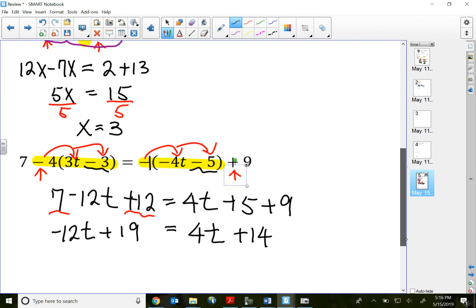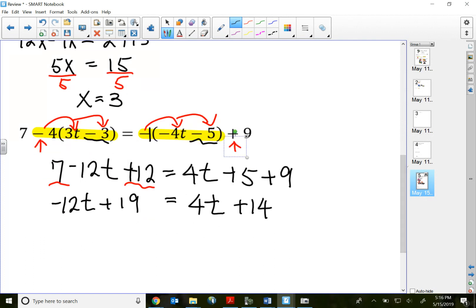I got variable terms on both sides. Negative 12t on the left, positive 4t on the right. Positive 4t is bigger than negative 12t, so I'm going to move my negative 12t to the right side so I can keep my variable term positive at all times.